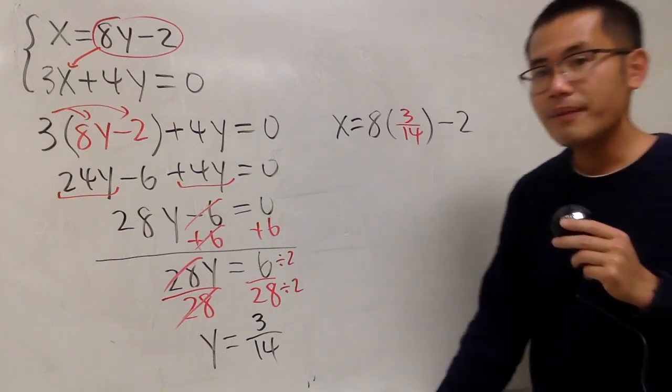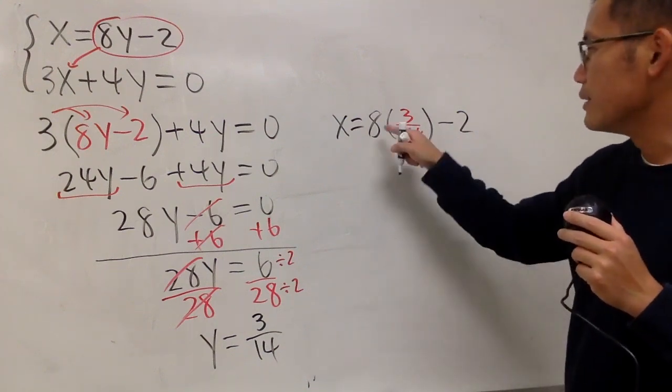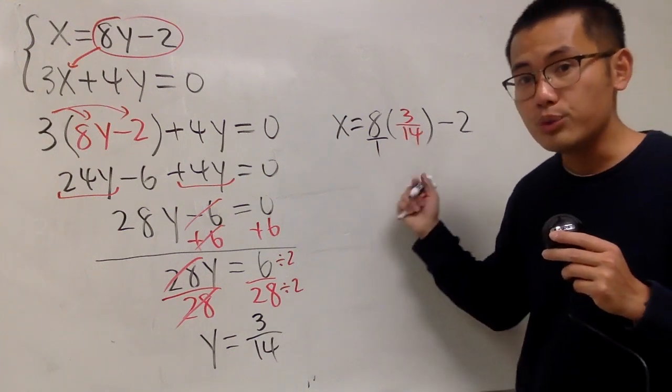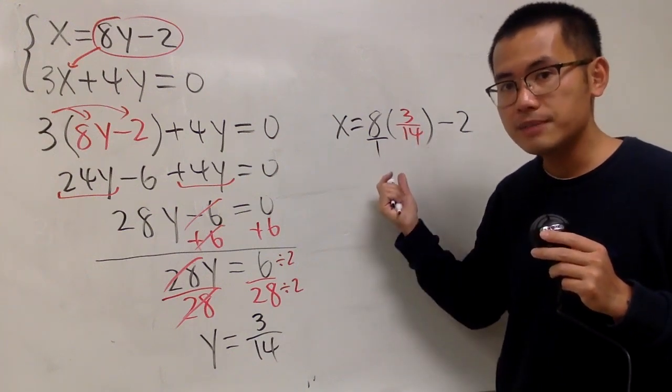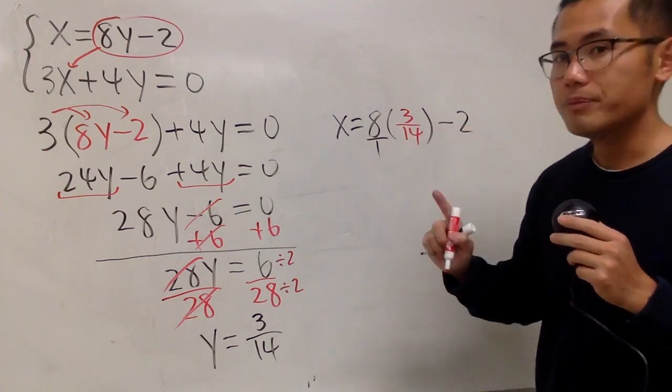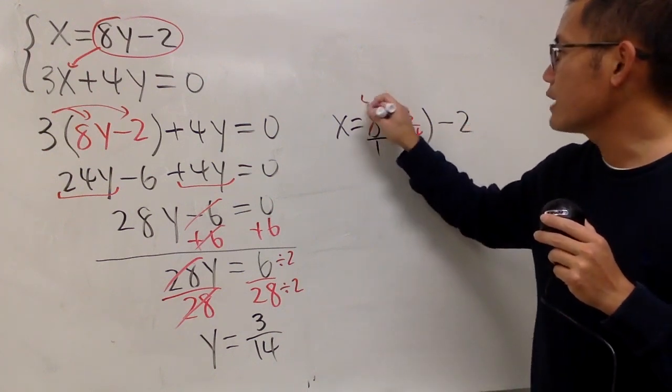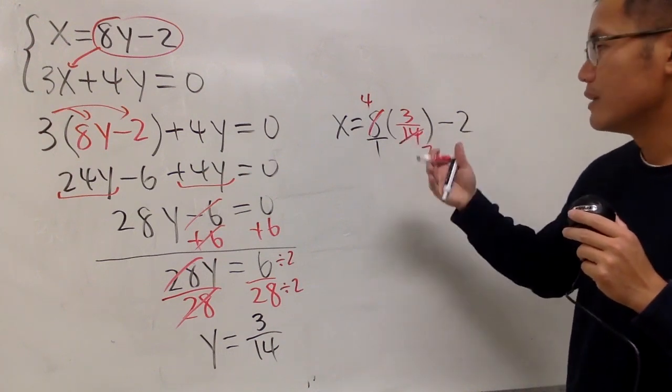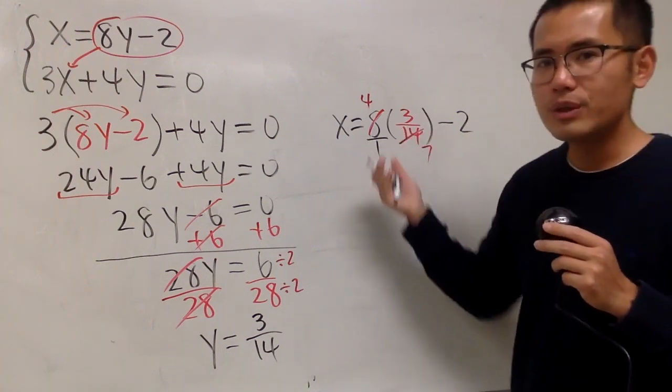And of course, we'll have to work this out. And you see, this is like saying 8 over 1. And again, we can cross-reduce whenever we are multiplying fractions. Look at the 8 and the 14. And we know 2 goes into 8 4 times. And 2 goes into 14 7 times. And that's the most that we can do right now.